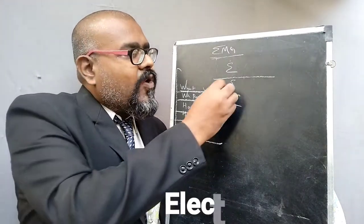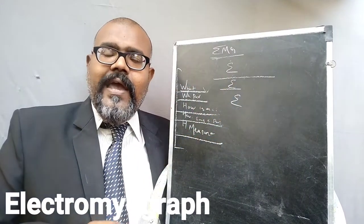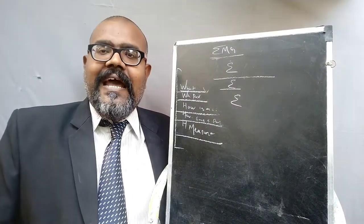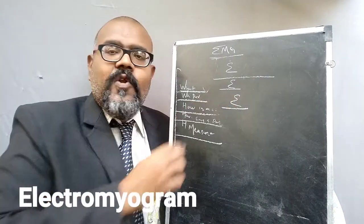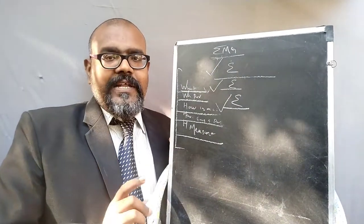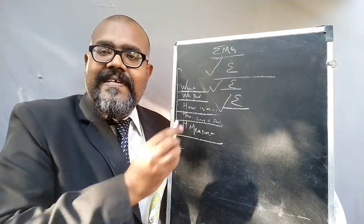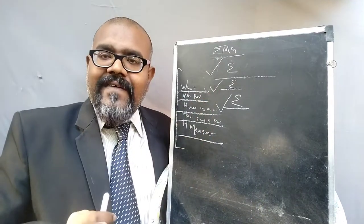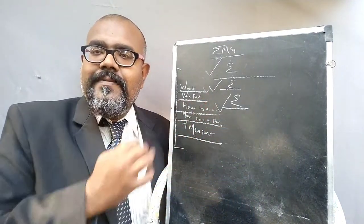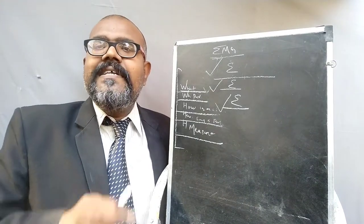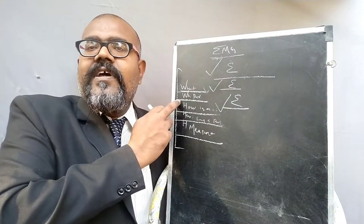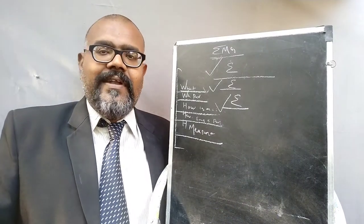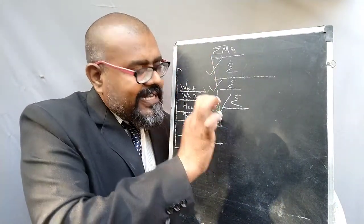For that particular technique, we are going to use the instrument called the Electromyograph. From the instrument, we can get the graphical representation of that particular electrical activity, which is called the Electromyogram. So: Electromyography is the diagnostic technique for measuring muscular activity; Electromyograph is the instrument used for measuring muscular activity; and Electromyogram is the output — the graphical representation of muscular activity.